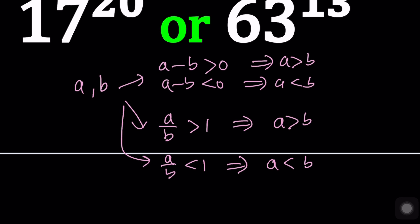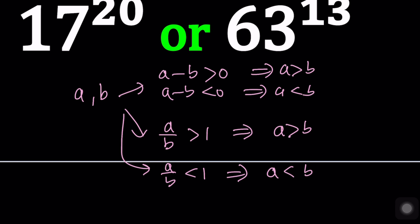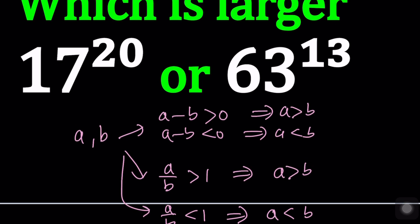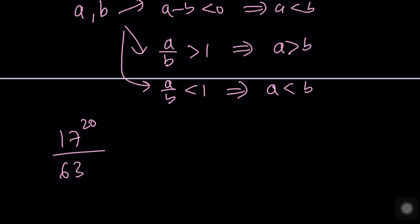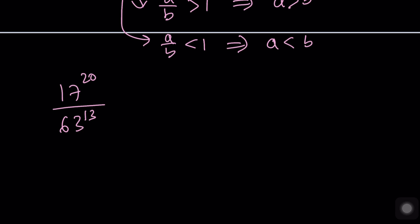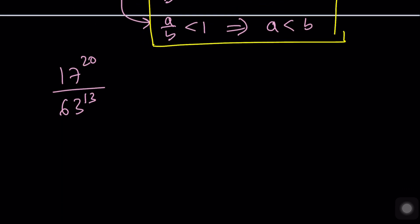So we could probably use these methods. But the exponents are not the same, so how do we deal with that? Subtraction is probably harder, so I would use division — we could divide these numbers and come up with some approximation. Our goal using the division method is to get something greater than 1 or less than 1. We can try to get either the same base or the same exponent.